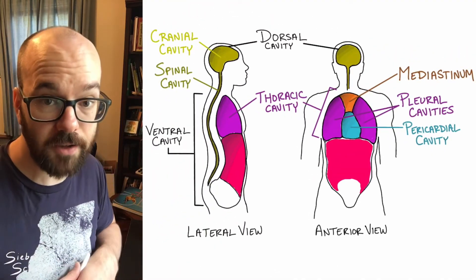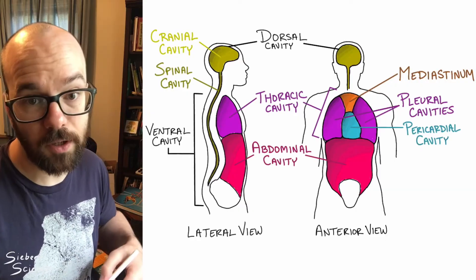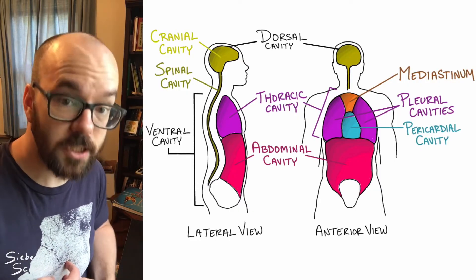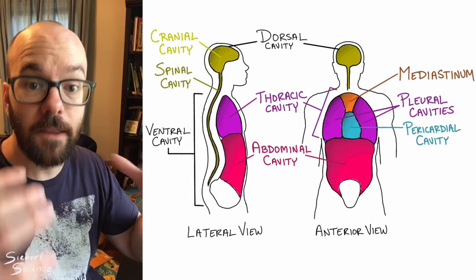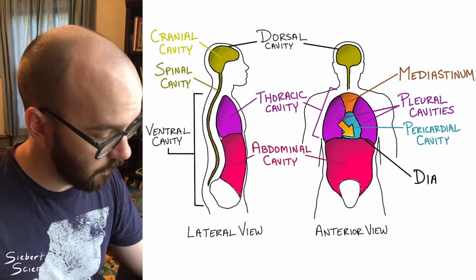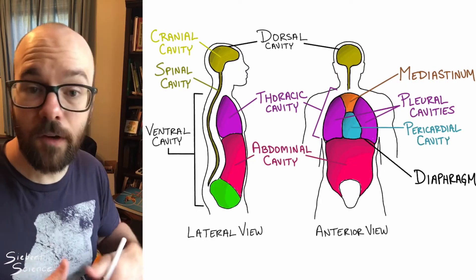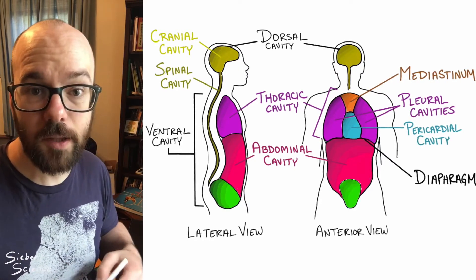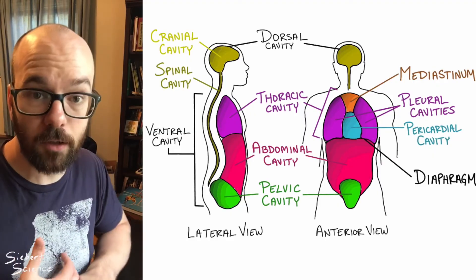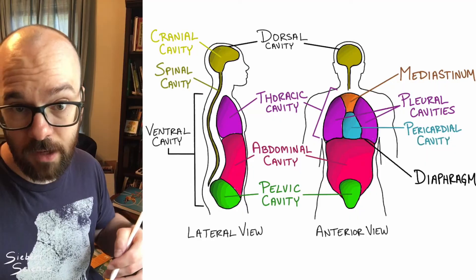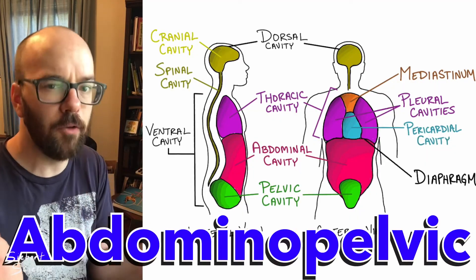Just inferior to the thoracic cavity is the abdominal cavity. The abdominal cavity contains lots of organs like your stomach and digestive organs. It's divided from the thoracic cavity by the diaphragm, located right in between those two cavities. Finally, inferior to the abdominal cavity is the pelvic cavity, which will contain the urinary organs and reproductive organs.